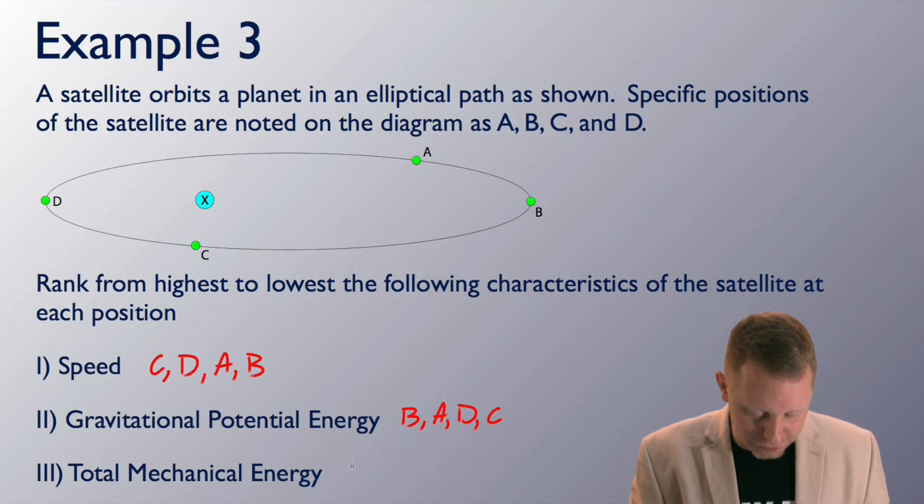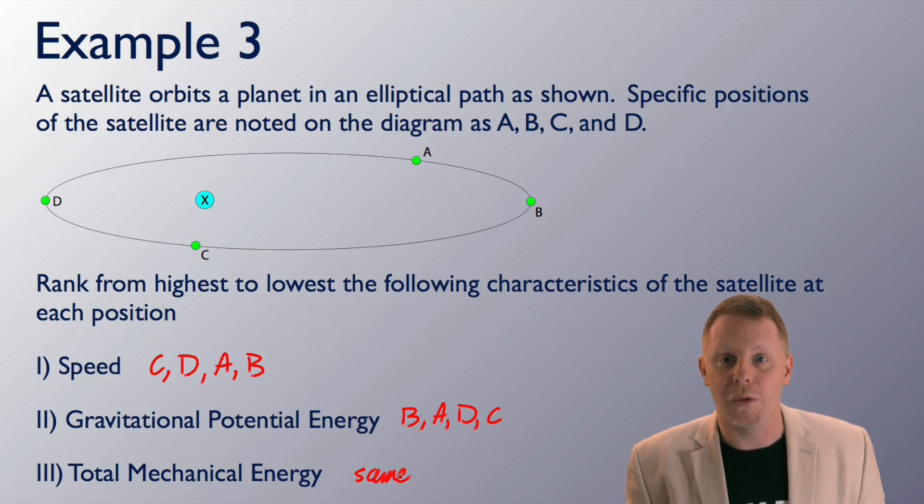Total mechanical energy, however, is going to be the same at all points. Why is that? Well, we don't have any external forces, no external work being done on the system, so the energy must remain the same. The law of conservation of energy. All right, let's take a look at another example.